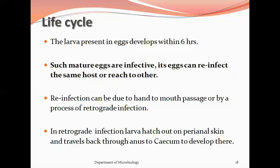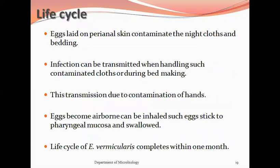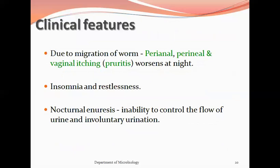These embryonated eggs are the infective forms and can reinfect the same host or reach another. Reinfection can be due to hand-to-mouth passage or by retrograde infection, where larvae hatch on the perianal skin and travel back through the anus to the cecum to develop. Eggs laid on the perianal skin contaminate clothes and bedding, and infection can be transmitted when handling such contaminated materials or during bed-making. Eggs can also become airborne, be inhaled, stick to the pharyngeal mucosa, and be swallowed. The complete life cycle takes about one month.